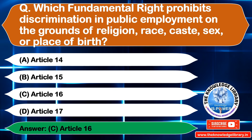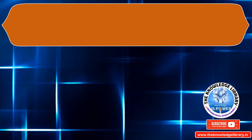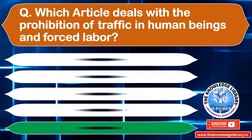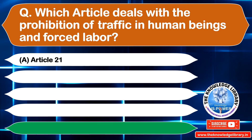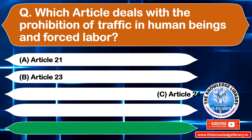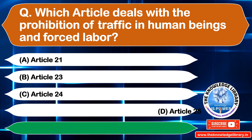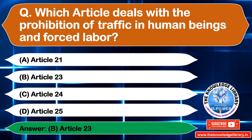The next question is: which article deals with the prohibition of trafficking in human beings and forced labor? Option A: Article 21, Option B: Article 23, Option C: Article 24, Option D: Article 25. The correct answer is Option B: Article 23.